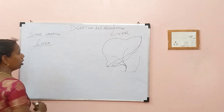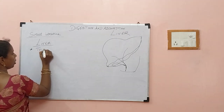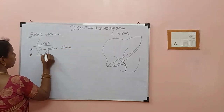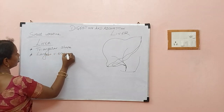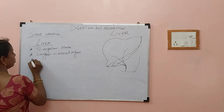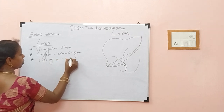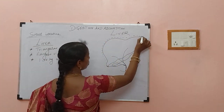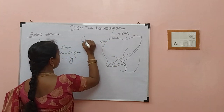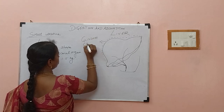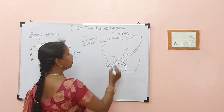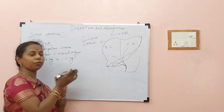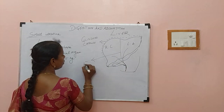The liver has a somewhat triangular shape. It is the largest visceral organ and measures around 1.35 kg to 1.5 kg. It is surrounded by a membrane called Glisson's capsule. You can find two lobes: a right lobe and a left lobe. These right and left lobes are separated by a ligament called the falciform ligament.